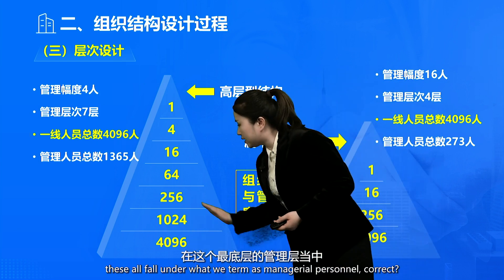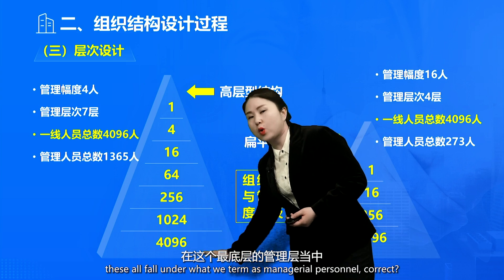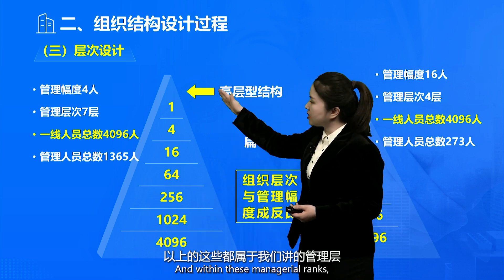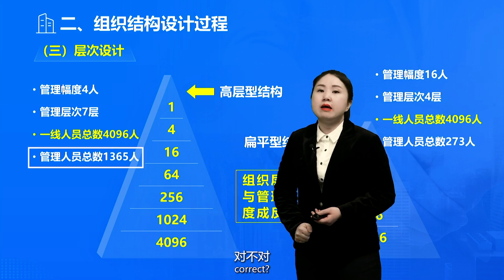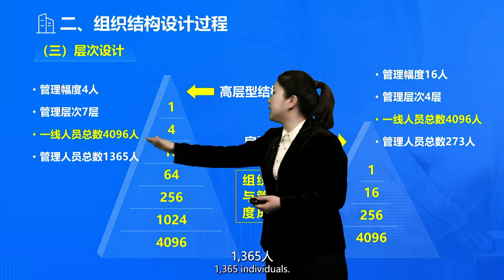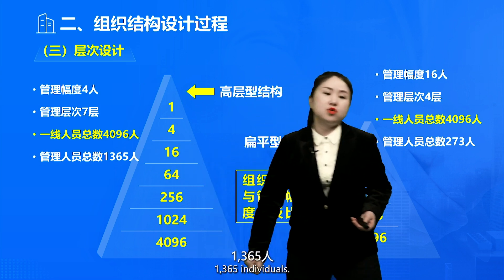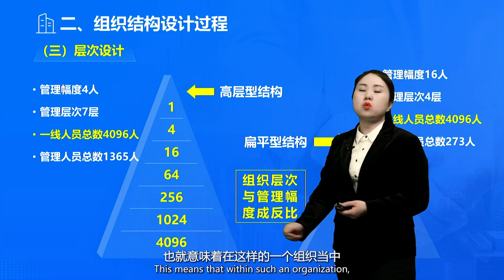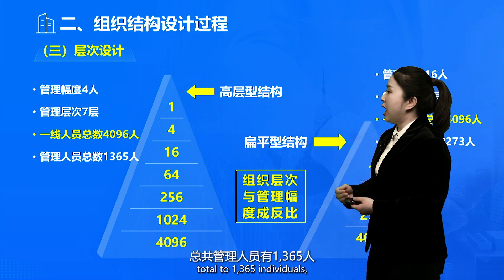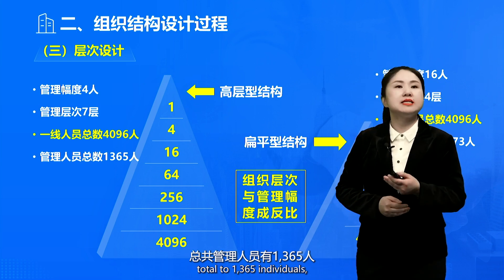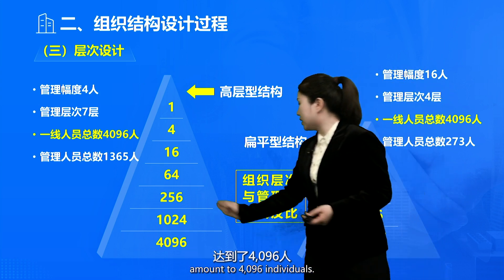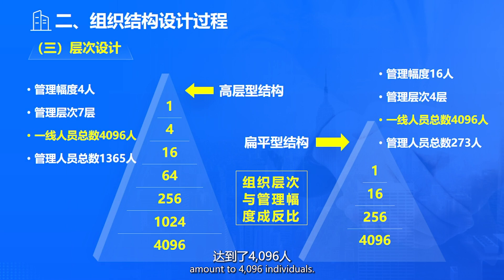All these individuals fall under managerial personnel. Adding up these managerial ranks, we have a total of 1,365 individuals. This means that within such an organization, our managerial personnel total 1,365 individuals, while our frontline staff amount to 4,096 individuals.